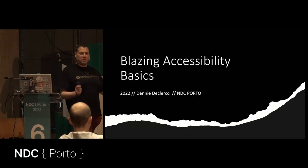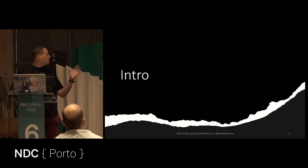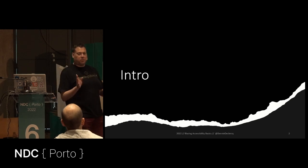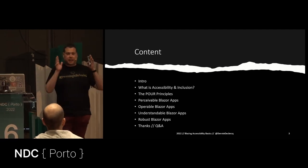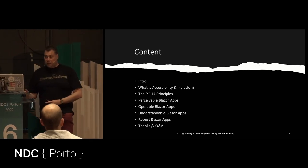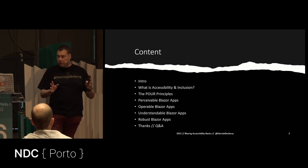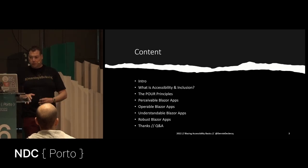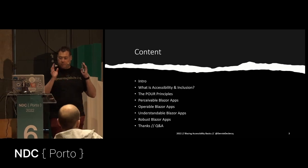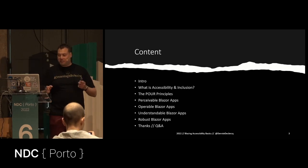Welcome everyone to my talk about Blazor Accessibility Basics — making accessible websites in Blazor. We're going to start with an introduction covering what accessibility is, what inclusion is, and I'll guide you through the POUR principles: Perceivable, Operable, Understandable, and Robust. The biggest part of the presentation covers each of those, and then I'll thank you all for coming.